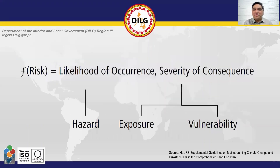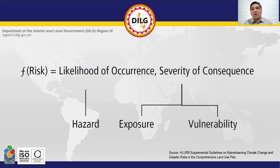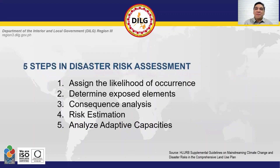The formula for computing the level of risk is to obtain the likelihood of occurrence of a hazard and multiplying it with the severity of consequence score. There are five steps in disaster risk assessment: assign the likelihood of occurrence, determine exposed elements, consequence analysis, risk estimation, and analyze adaptive capacities.